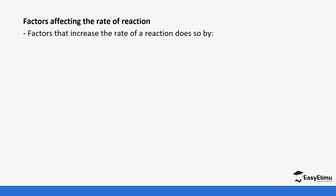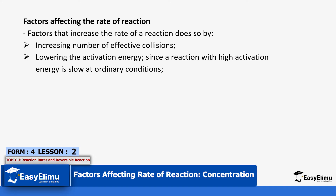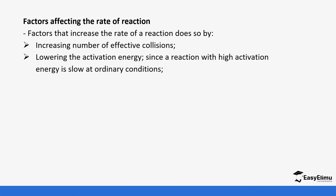Factors affecting the rate of reaction can either do so by increasing the number of effective collisions or lowering the activation energy, since a reaction with high activation energy is slow at ordinary conditions. To increase the rate of reaction we either increase the number of effective collisions — and when explaining, it needs to be effective or successful collisions — or we lower the activation energy, because high activation energy causes a slow reaction.